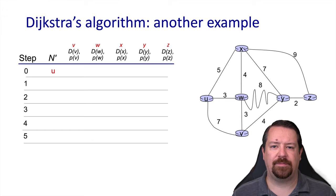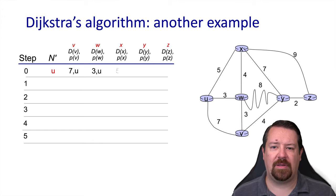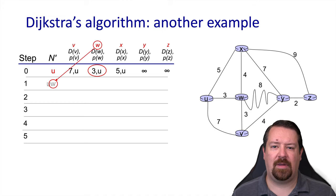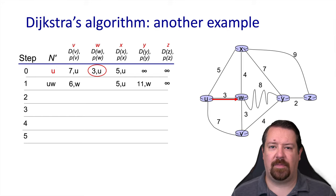Let's walk through another example. Again, u is on the left and n' starts containing only u since the cost to get to itself is zero. u is directly connected to x, w, and v, so we populate those costs and the cost to remaining nodes is infinity. The predecessor node for all directly connected neighbors is u. The least cost neighbor is w, so we add that to n' and find updated costs going through w — we get a lower cost to v with predecessor w, and add neighbor y with a higher cost through w. We still can't reach z at this point.